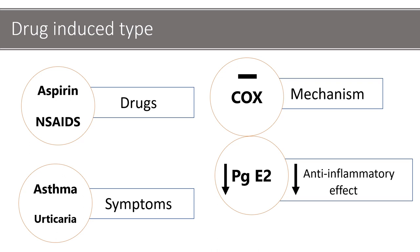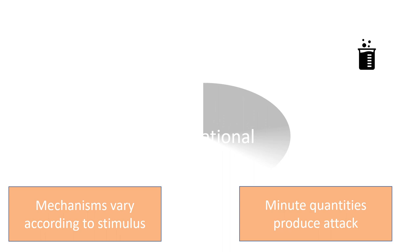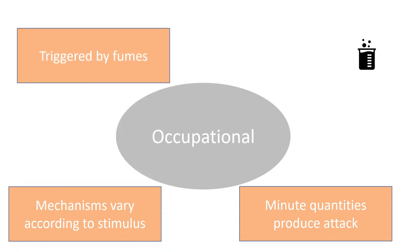Coming to occupational asthma, occupational asthma is caused by minute quantities of triggers. These triggers might be fumes like epoxy resins, organic and chemical dusts like cotton, or gases like toluene. The mechanism by which it causes asthma varies according to the trigger. It can be type 1 reaction or direct liberation of bronchoconstrictor agents.